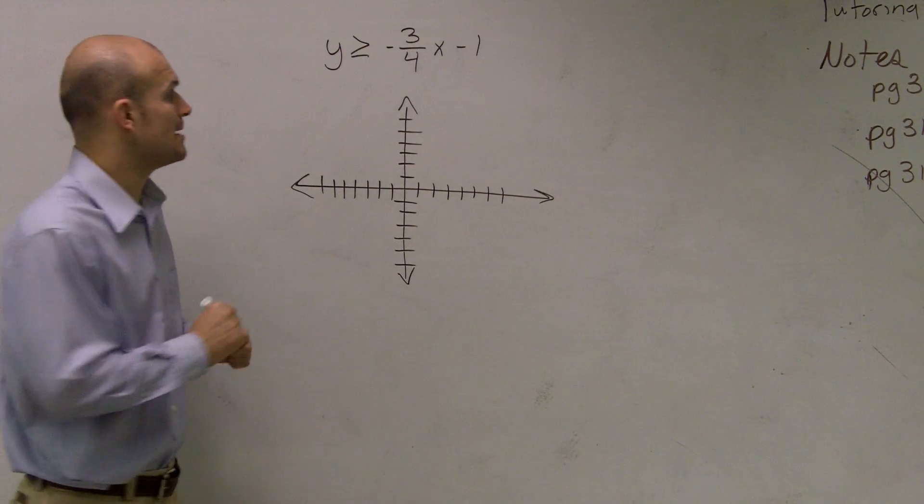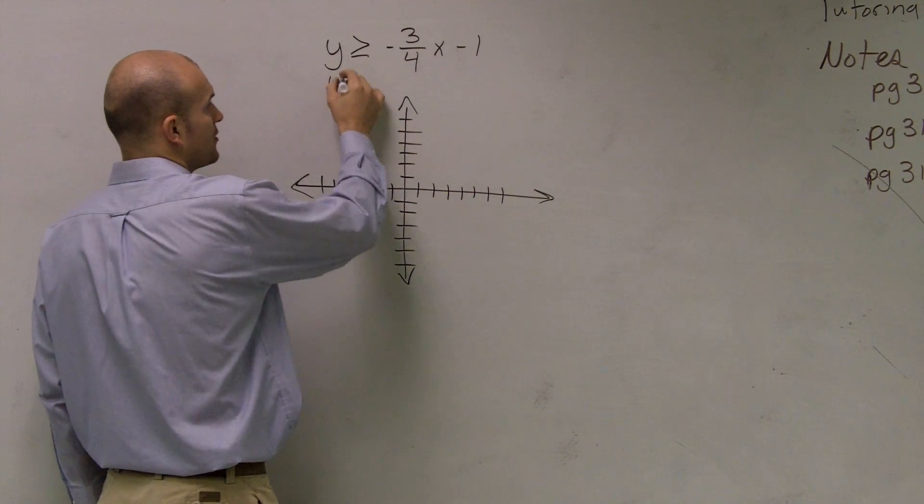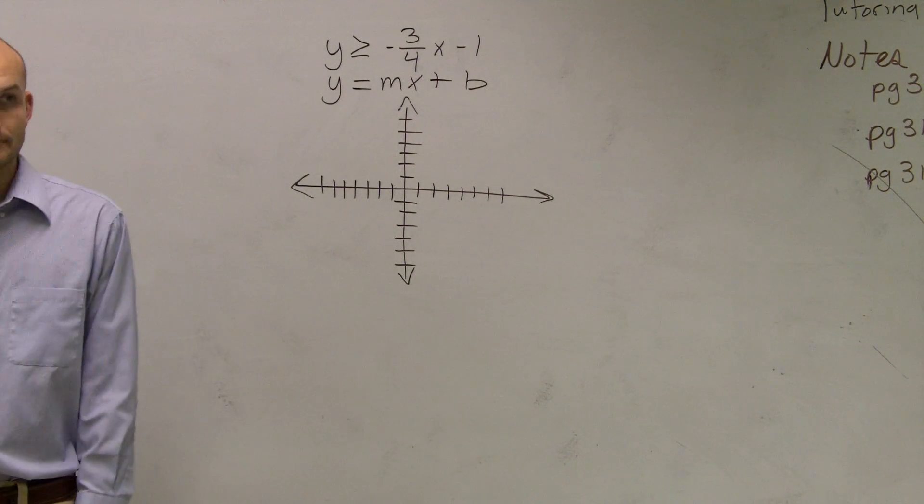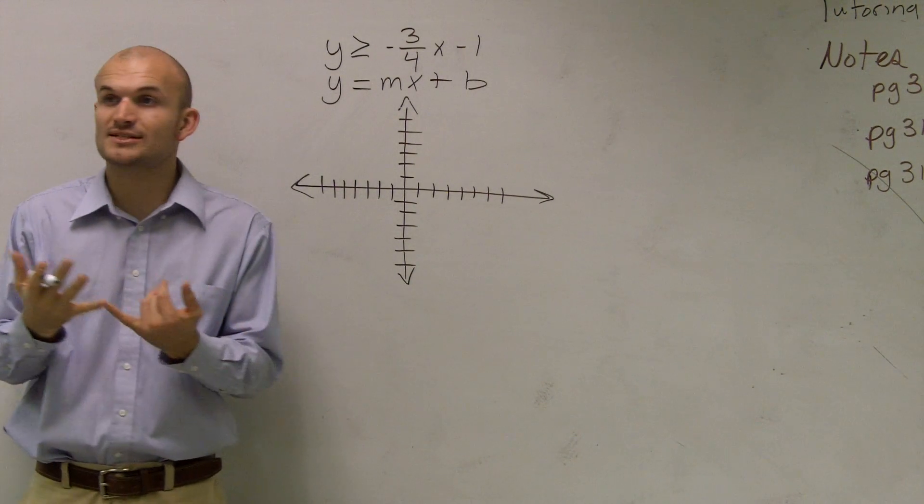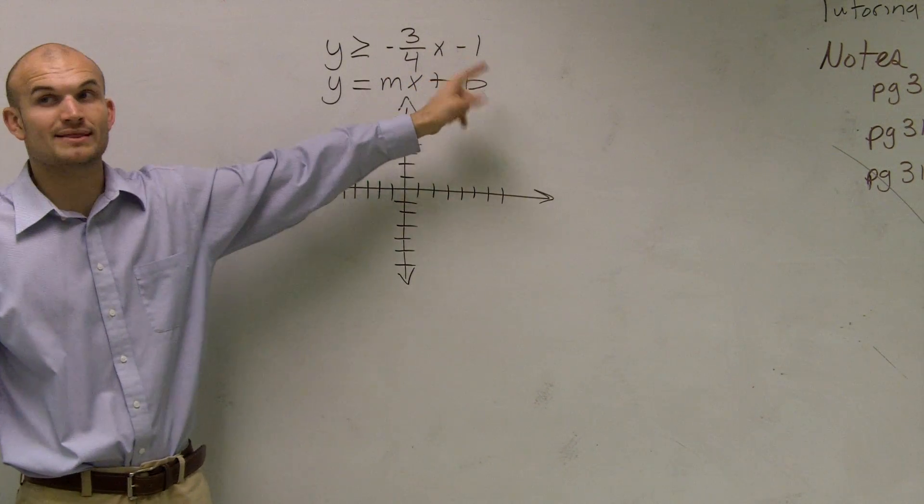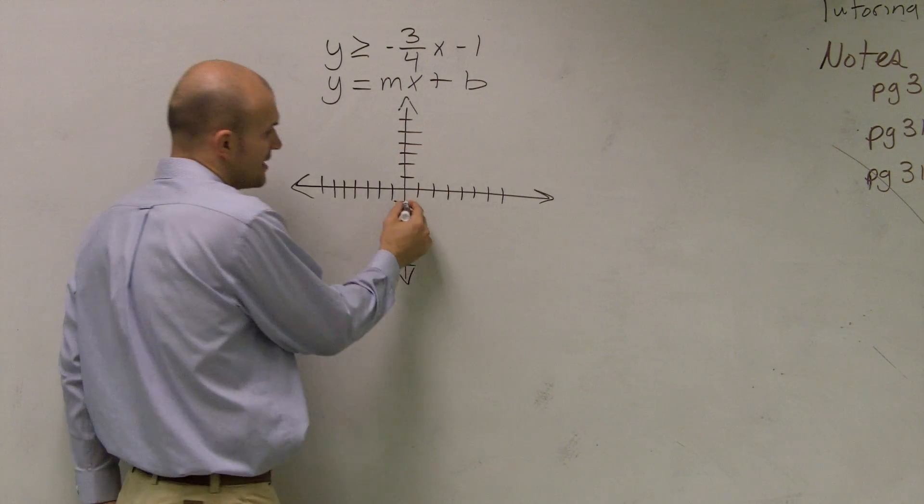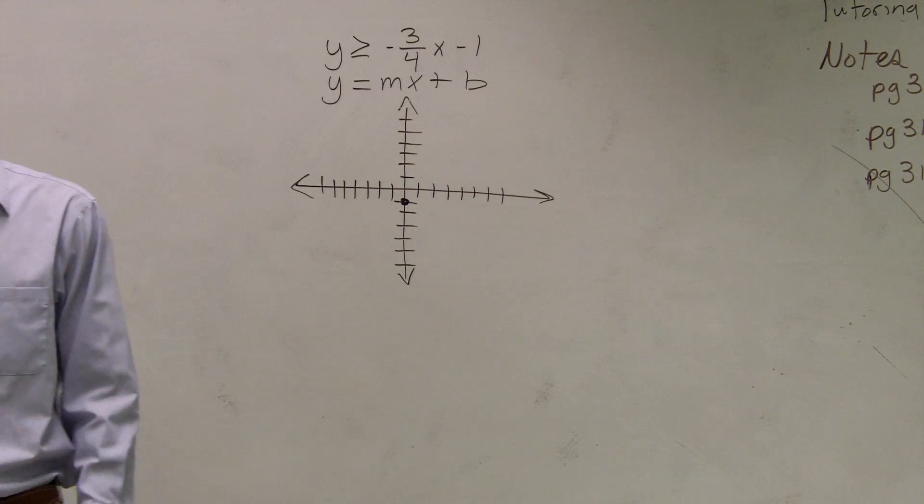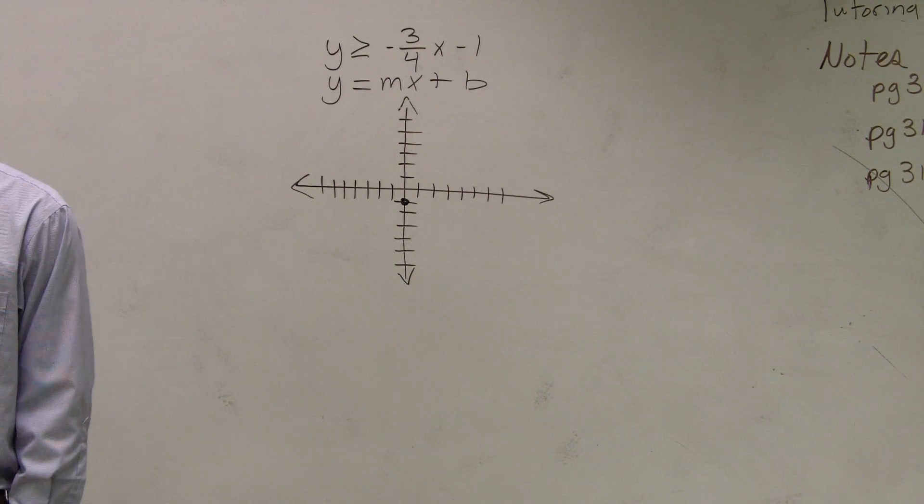So the first thing we need to remember is what is our slope intercept form? Remember it's y equals mx plus b. Remember b represents our y intercept. So we can see that b is negative 1. That means our graph crosses at negative 1. So I'm making a nice big dot there for us to remember that that's where my graph crosses the y intercept.